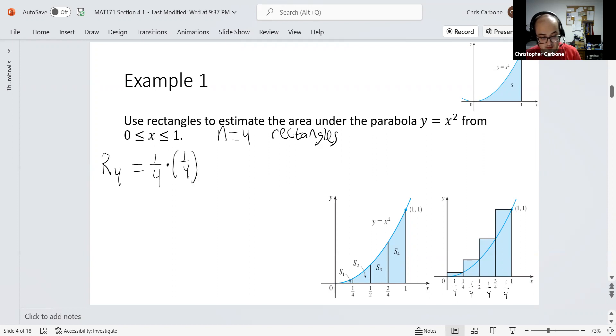This would be times one-fourth squared for this first right endpoint. For the second one of one-half, that would be plus one-fourth times a half squared again, plus the third one ending at the right endpoint at three-fourths, so plus one-fourth times three-fourths squared, plus this last one ending at one, all the way up over here, that would be one-fourth times one squared. Multiplying, adding, and whatnot, we get 15/32, which gives us a value of 0.46875.